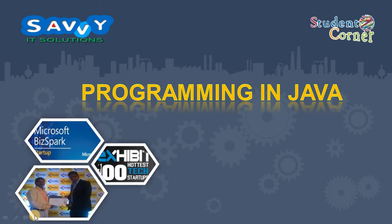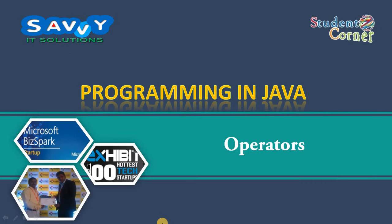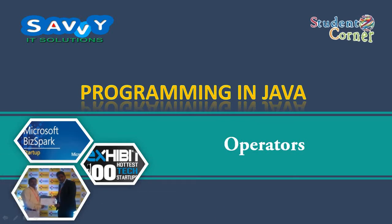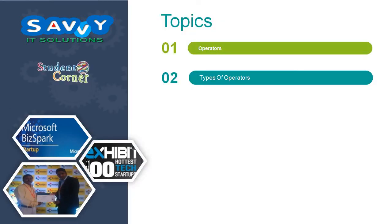Welcome to SaviIT Solutions. We are discussing a continuation of operators. In the previous class we learned about what an operator is and the types of operators, and we already discussed 5 operators with examples. Now we are learning the remaining 3 operators in this video. We will revisit what an operator is and types of operators, followed by the remaining 3.